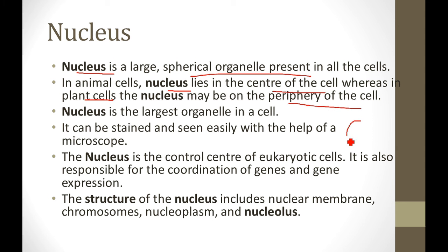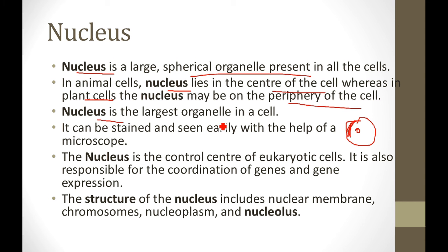Periphery means — if this is a diagram of a plant cell — this outer border, this is your periphery. The corners we call the periphery. So this is your nucleus; this small dot is your nucleus which is present near the periphery. The next point is that the nucleus is the largest organelle in a cell.